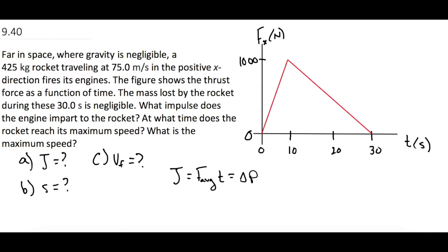For part A, we can use this relationship, but since we have this graph of force versus time, the area under this curve will give us the impulse. We have a triangle here, so for J, we're going to find the area under the curve.